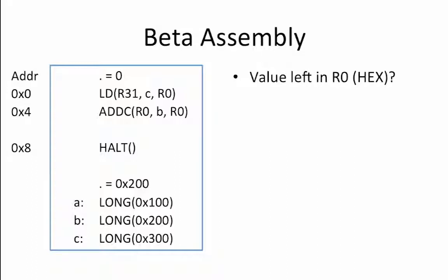This code begins with a load operation into register R0. The load uses the value of R31 plus C as the source address for the load. Since R31 equals 0, this means that the value stored at address C is being loaded into R0. So after the load, R0 equals 0x300.